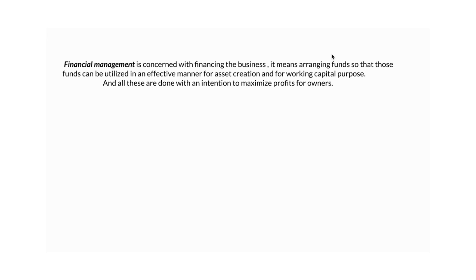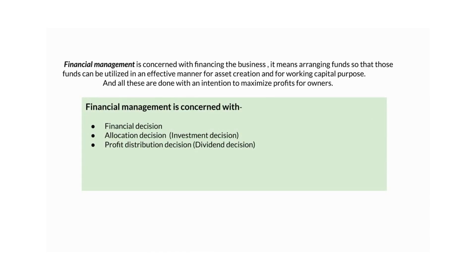All this is done with an intention to maximize profit for the owner. So we can say that financial management is concerned with the financing decision, allocation decision, and profit and distribution decision. The financial decisions a manager takes are related to finance, and all such decisions come under investment decision, and after that, dividend decision.